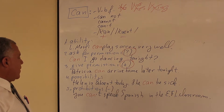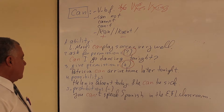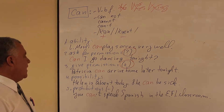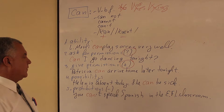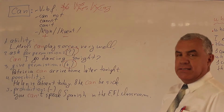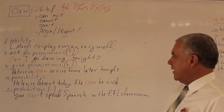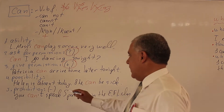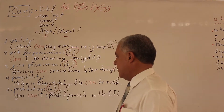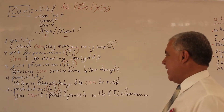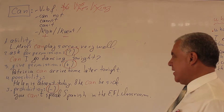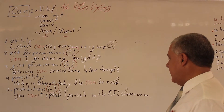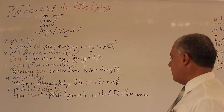The next one: CAN is used to indicate possibility. For example, Helen is absent today. She can be sick. The last one: CAN is used to indicate prohibition in negative statements. As you can see in the example, you can't speak Spanish in the EFL classroom.